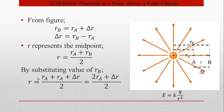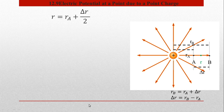R_B کی value substitute کریں تو R کی value 2R_A plus delta R over 2 بنے گی۔ جب 2 کو numerator کے numbers سے divide کریں گے تو R equal ہوگا R_A plus delta R over 2۔